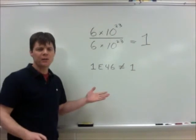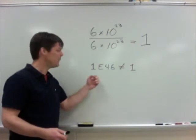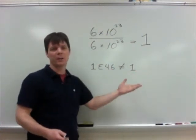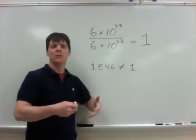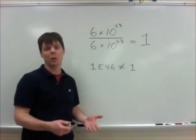So we just tried to do this division problem using a common strategy that I see a lot of students use, but we got the totally wrong answer. 1 times 10 to the 46th is not the same thing as 1, which we had predicted earlier should be our answer for this. So why did this occur? We need to break it down and understand what your calculator is actually doing with these numbers.